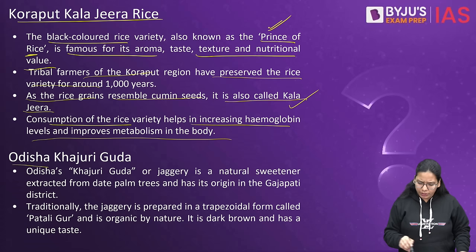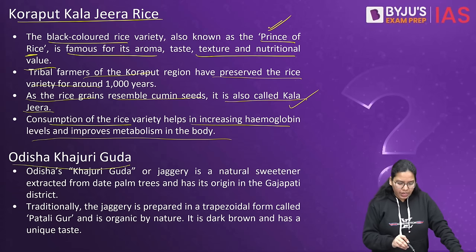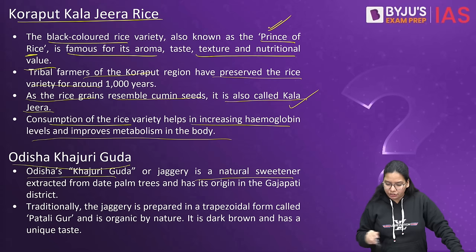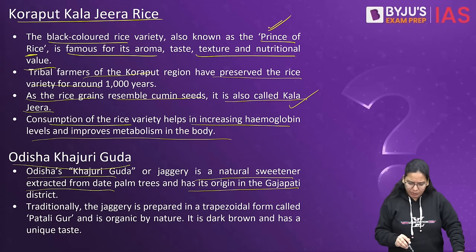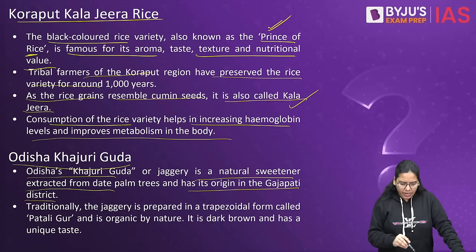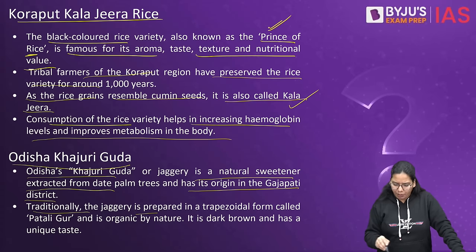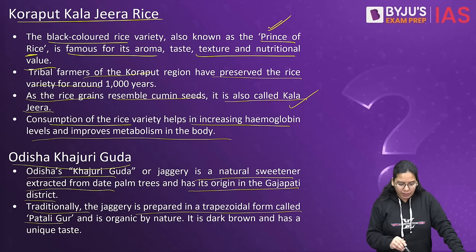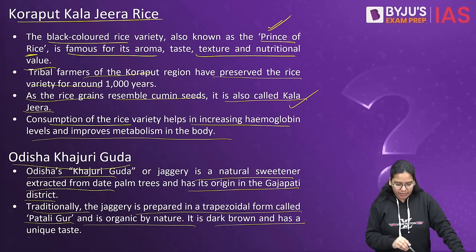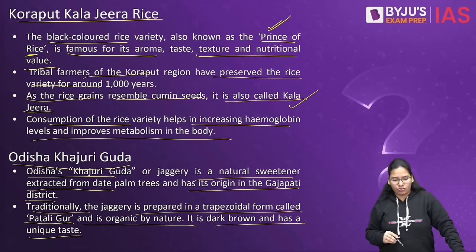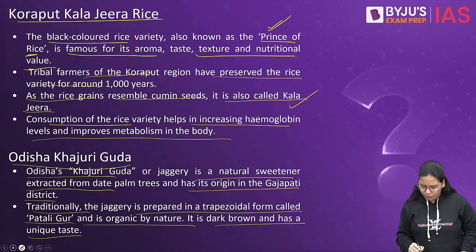Fourth GI product: Odisha's Khajuri Gura or Jaggery — a natural sweetener extracted from date palm, with its origin in the Gajapati district. Traditionally the jaggery is prepared in a trapezoidal form called Patali Gura and is organic by nature. It is dark brown with a unique taste.